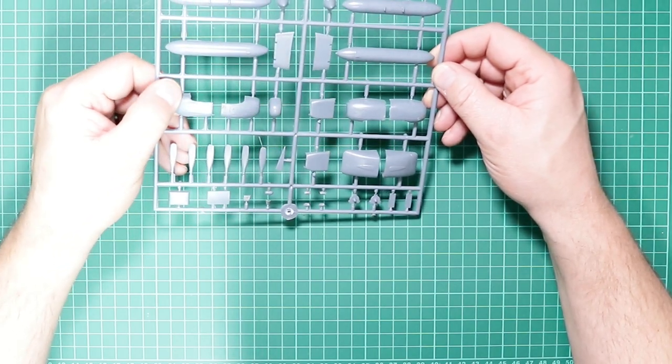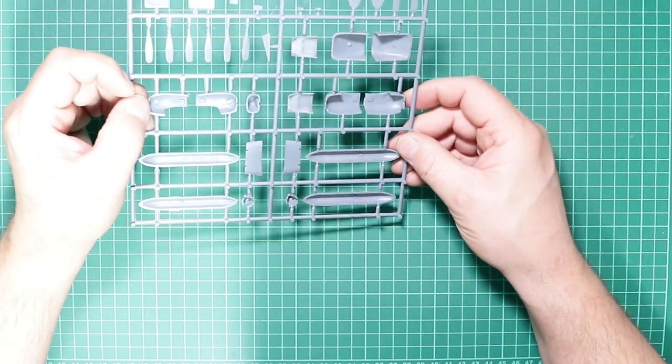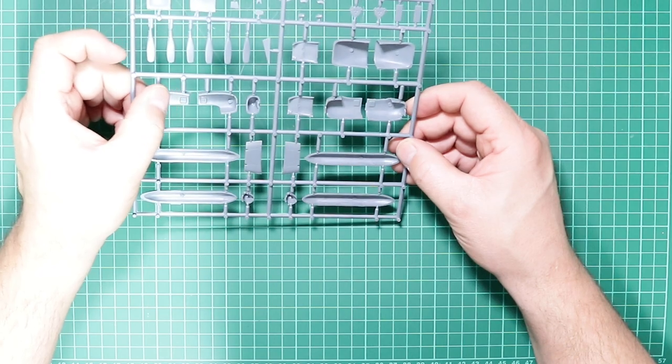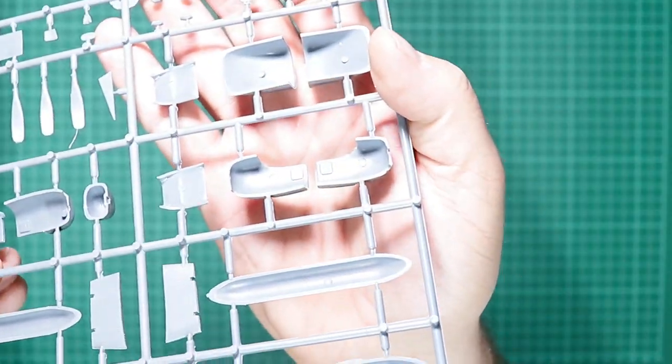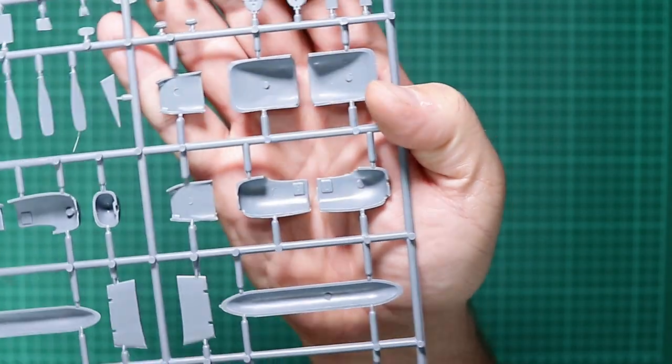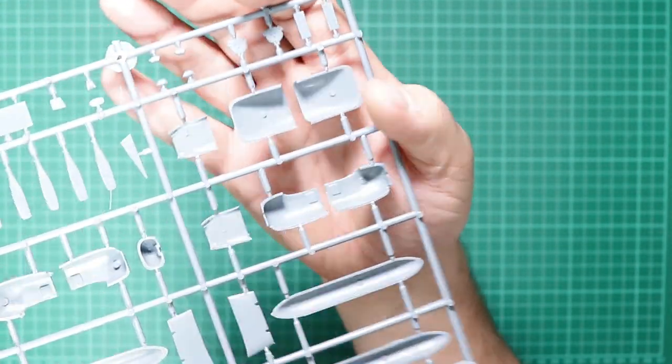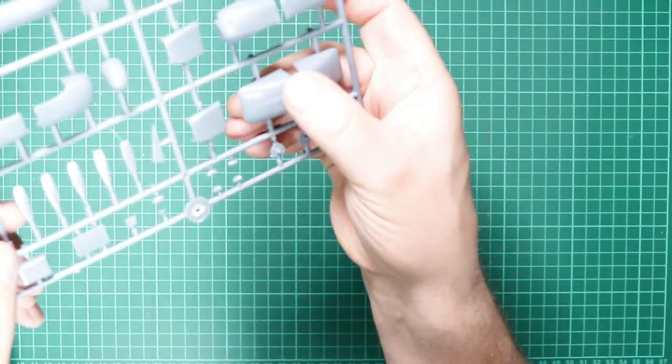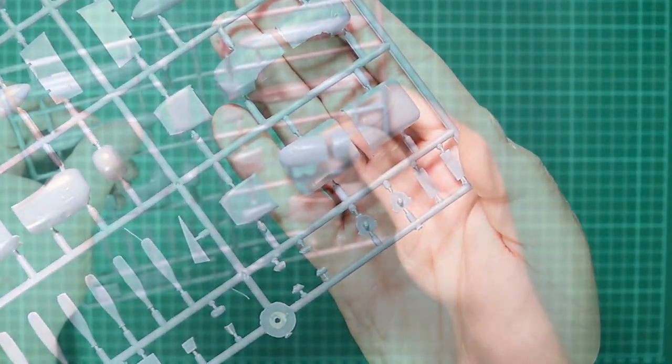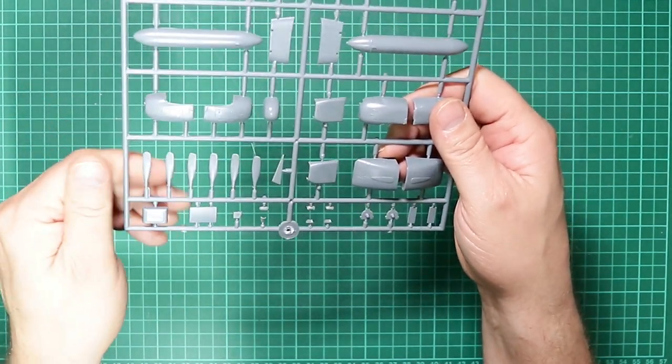We've got a grey sprue which has got the prop blades on. There's a little bit of flash, but bear in mind this is a limited run kit, so it's not a mainstream kit. We've got no location pins, but we have got some helpful details in there in terms of left and right. Just going to need a little bit of care cleaning everything up before it fits, but detail's quite nice. Parts are a bit greasy.